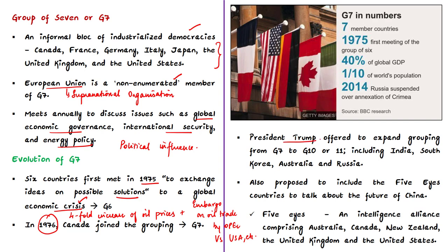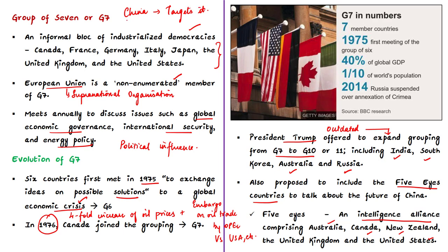Recently, the US President mentioned that G7 is a very outdated group of countries that no longer properly represents what is going on in the world. He proposed expanding G7 to G10 or G11, including India, South Korea, Australia, and even Russia. He also proposed including Five Eyes countries — an intelligence alliance comprising the US, UK, Canada, Australia, and New Zealand — to discuss the future of China. China immediately reacted, calling the proposed expanded group a move to target and isolate China.